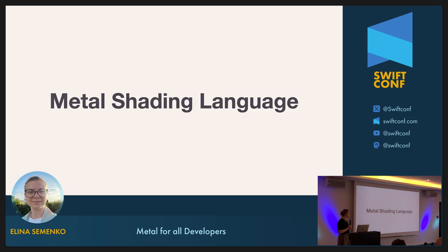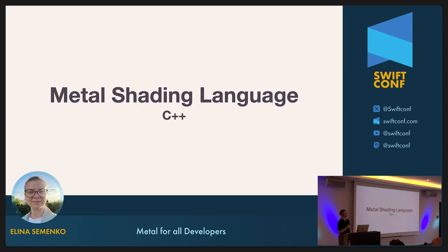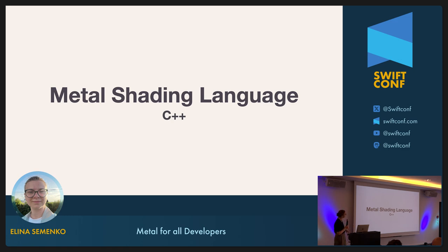To write our own shaders, we use the Metal Shading Language. MSL is similar to other shading languages like OpenGL Shading Language (GLSL). MSL is based on C++14, so if you're familiar with C++ syntax, it should be easy to understand. However, MSL is a very specific and small language — many regular C++ features are not available, such as lambda expressions and goto statements. There's also no support for data types like strings, and you shouldn't use the C++ standard library because Metal has its own.